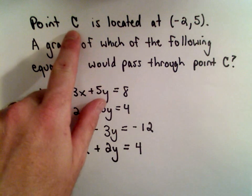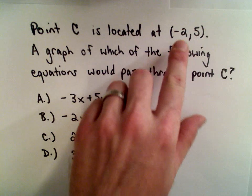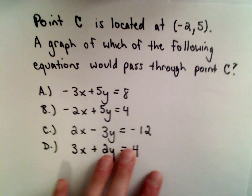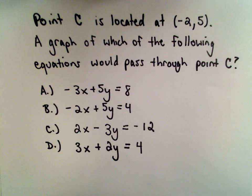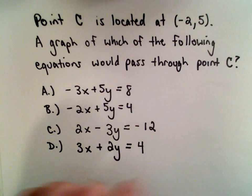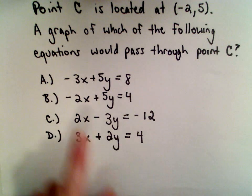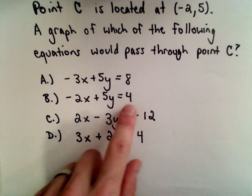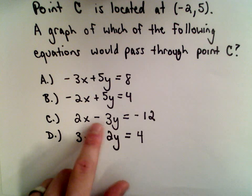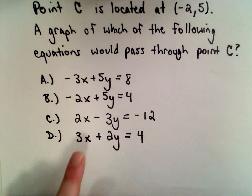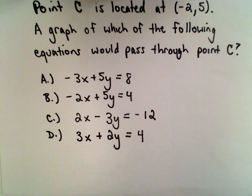We've got this point C located at the coordinates (-2, 5). We want to know a graph of which of the following equations would pass through that point C. We've got the equation A) -3x + 5y = 8, B) -2x + 5y = 4, C) 2x - 3y = -12, and D) 3x + 2y = 4.